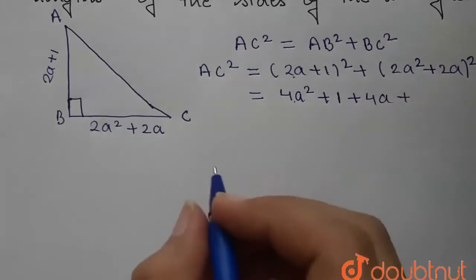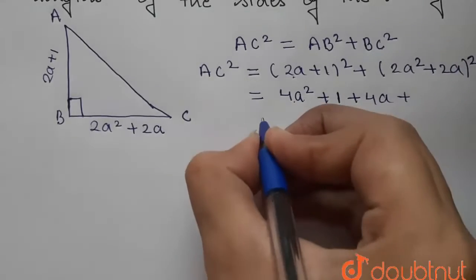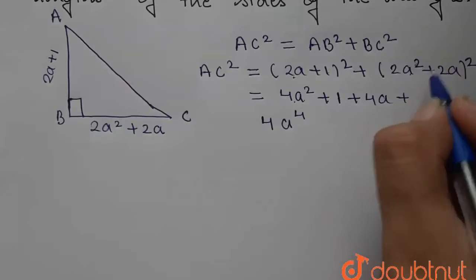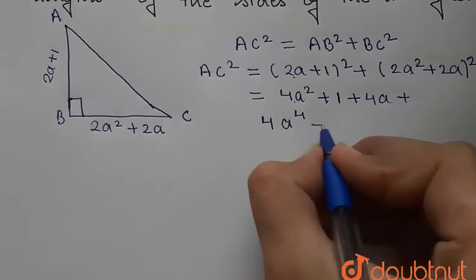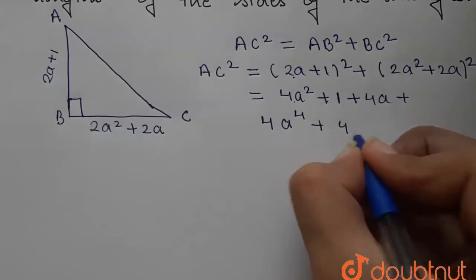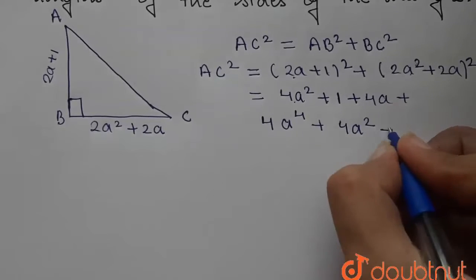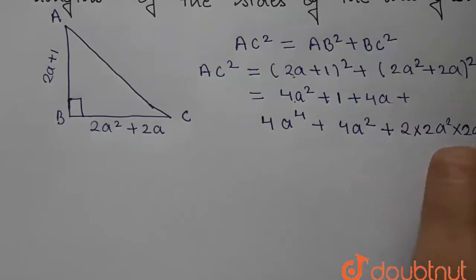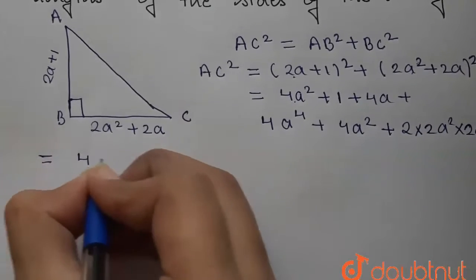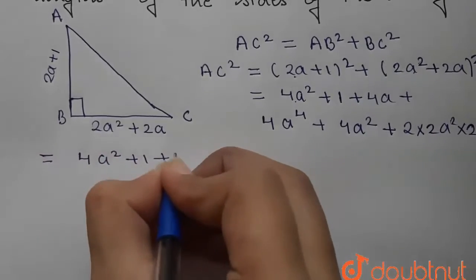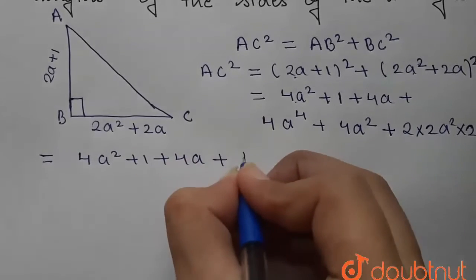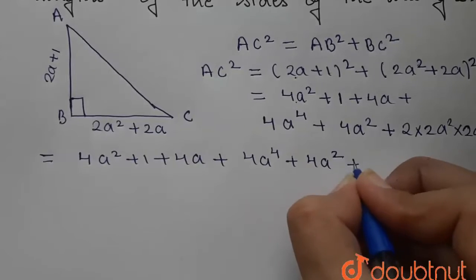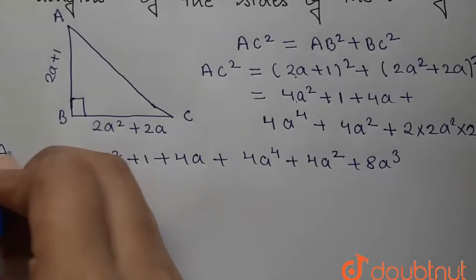Now we will open the second bracket with the same property. So we get 4a to the power 4, because a squared is being squared, plus 4a squared plus 2 into 2a squared into 2a, which gives 8a cubed. So the second bracket expands to 4a to the power 4 plus 4a squared plus 8a cubed.